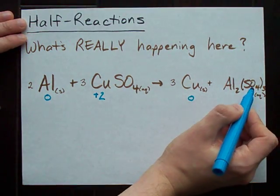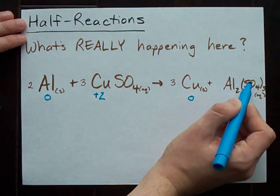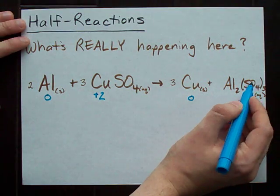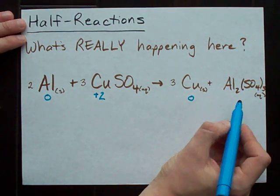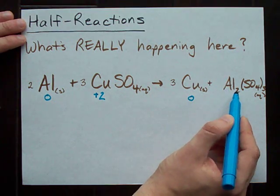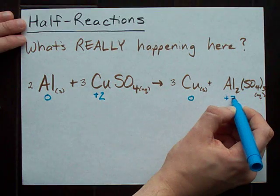And these three sulfates have a charge of minus two, or sorry, oxidation state of minus two each. Thus we have negative six in sulfates. We need positive six in aluminums, but there are two of them here. Each aluminum is plus three.